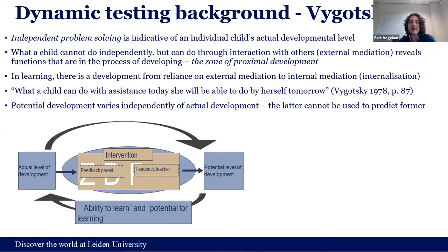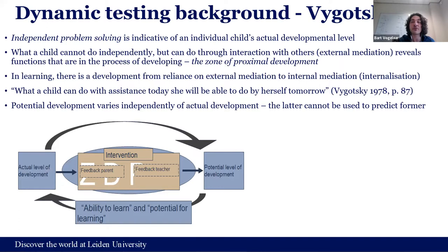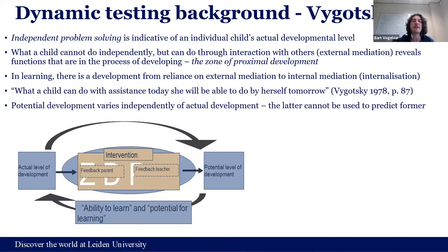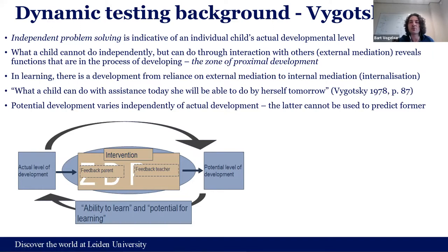Vygotsky's idea was that if we test children by means of conventional static tests, we only measure their actual level of development, which is not necessarily predictive of future learning. In order to really assess potential for learning, you need to know what is their potential level of development — that's why we are so keen on the zone of proximal development.